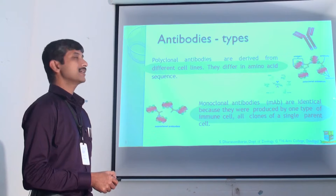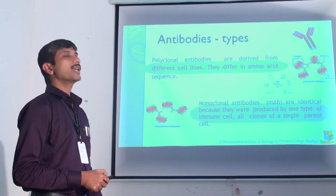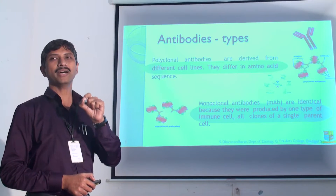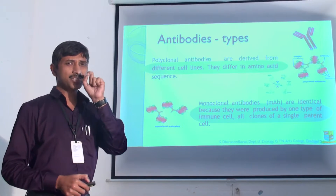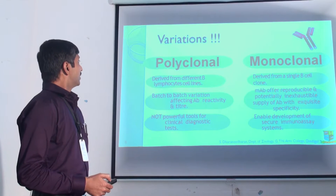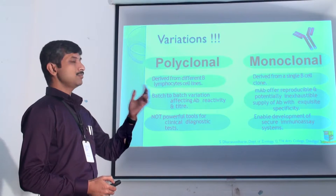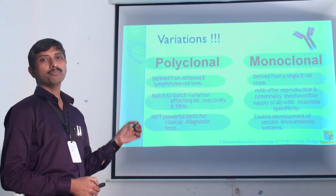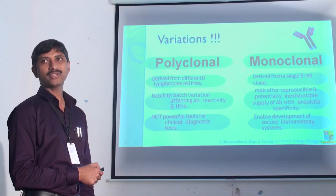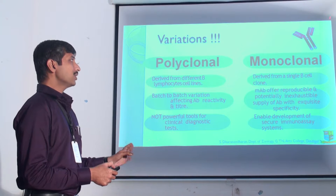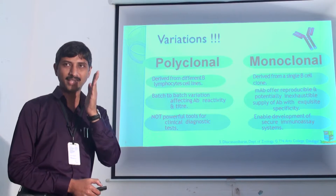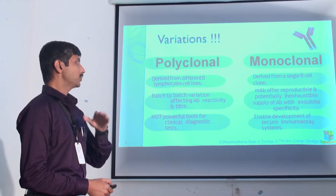Monoclonal antibodies are identical because they are produced by one type of immune cell — all clones of a single parent B-cell. The epitopic region is very specific; it will bind with the antigen exactly. Polyclonal antibodies are derived from different B-lymphocyte cell lines, whereas monoclonal antibodies are produced from a single B-cell clone — the same cell divided to produce the monoclonal antibody.